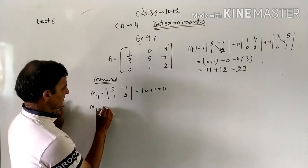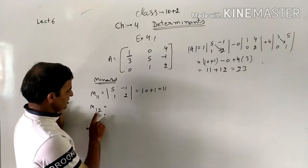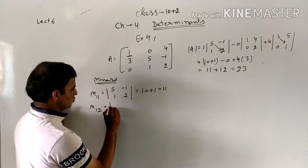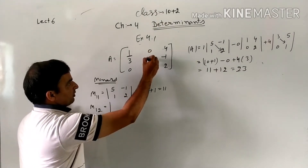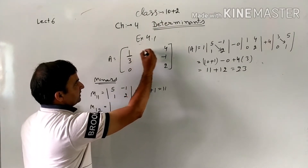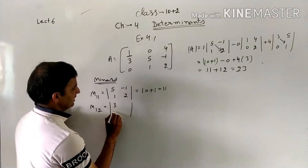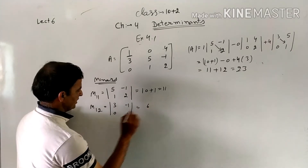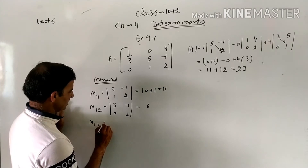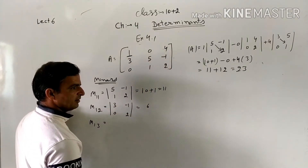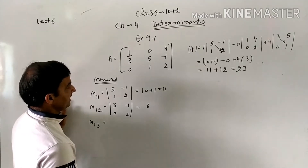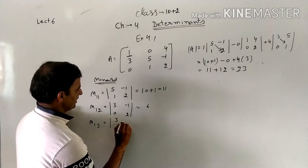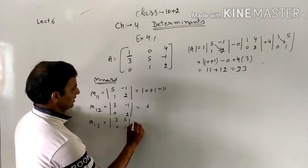M12 means the element at first row, second column, which is 0. Deleting its row and column leaves [3, -1; 0, 2]. The determinant gives 6. M13 is for element 4: deleting its row and column gives a determinant of 3.